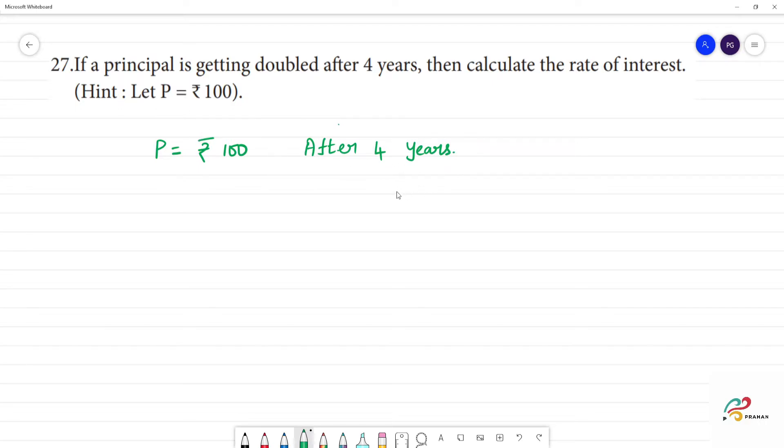After 4 years, the principal becomes 2P. So, the amount becomes 2 into principal. Amount is doubled after 4 years. The principal becomes 2P.